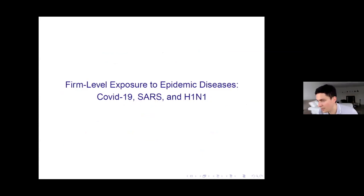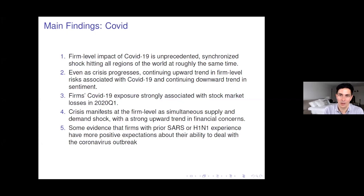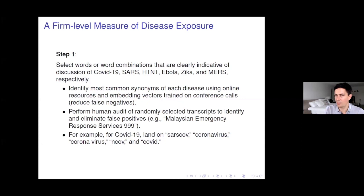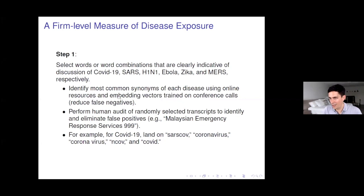Now let me spend about 10 minutes on the other paper. We're going to do the same thing but for coronavirus and SARS and other diseases. Now I have to add another step: I need to look for keywords, since it's not as easy as with Brexit. We identify the most common synonyms for each disease using what the WHO says, and then use a computational linguistics tool — embedding vectors trained on conference calls — to reduce false negatives. We deal with false positives by human audit: an RA reads the text snippets and checks for false positives. MERS sometimes refers to the Malaysian Emergency Response Services, but medical terms are generally pretty unambiguous.